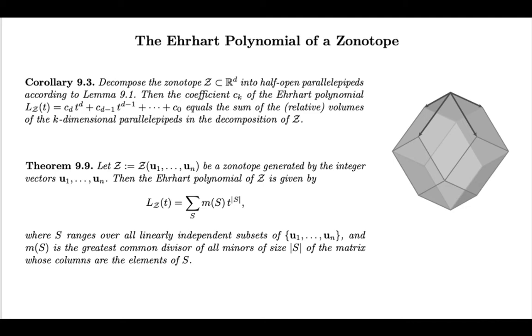And now what theorem 9.9 says, I can compute the Ehrhart polynomial by going through linearly independent subsets of those columns, produce a submatrix, and then compute all minors of the submatrix, and then take the GCD of all minors. And my claim is that this will give you precisely the coefficients of the Ehrhart polynomial.